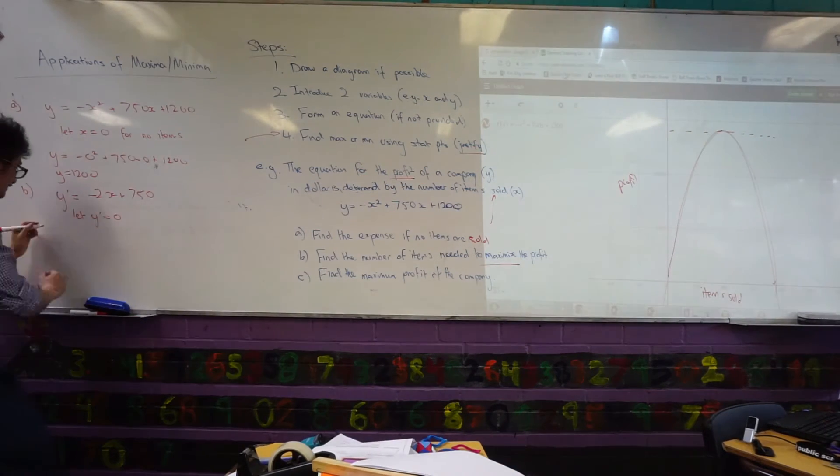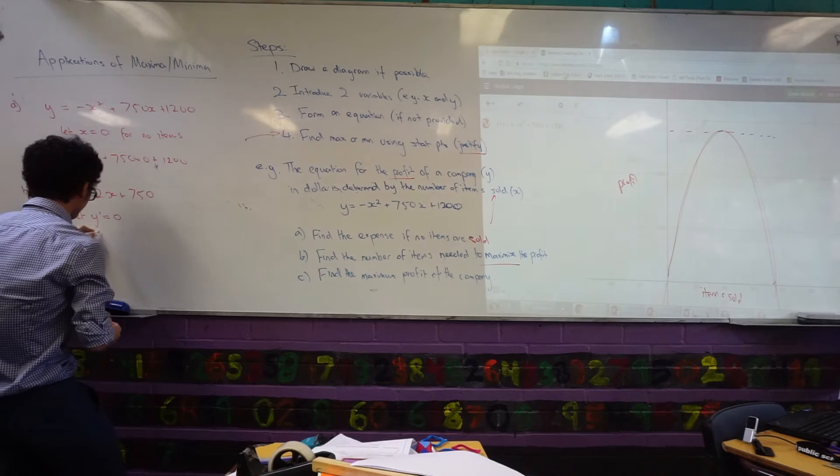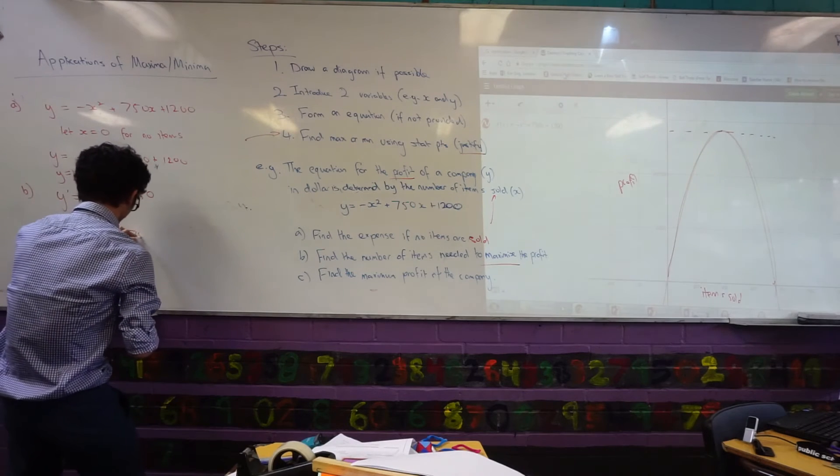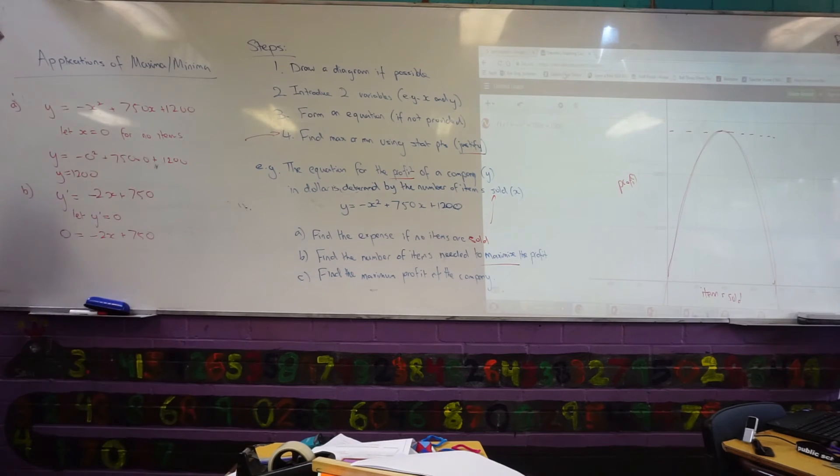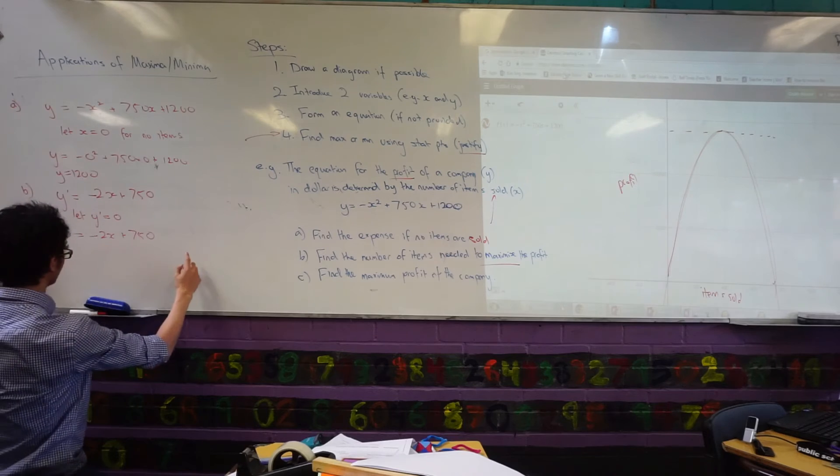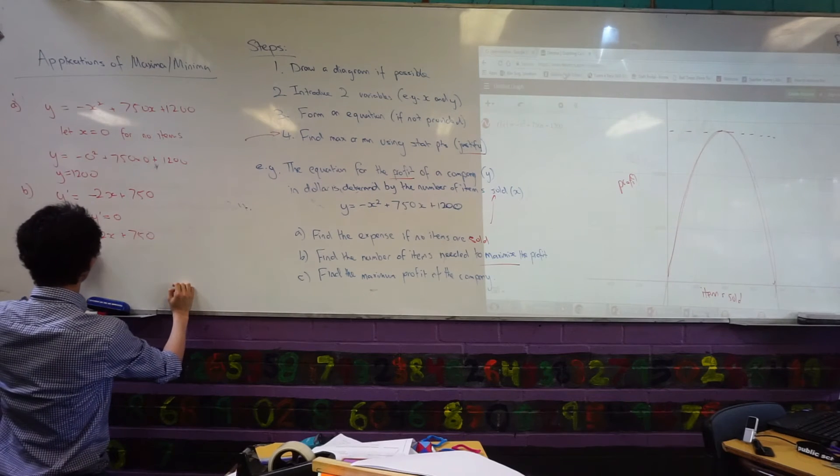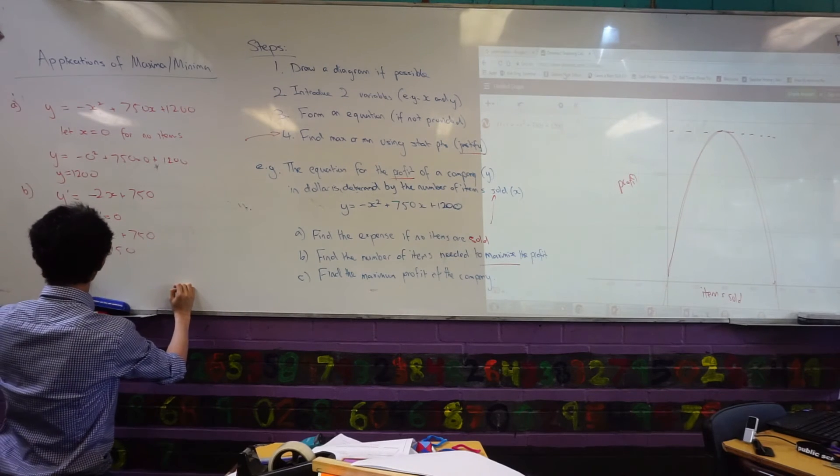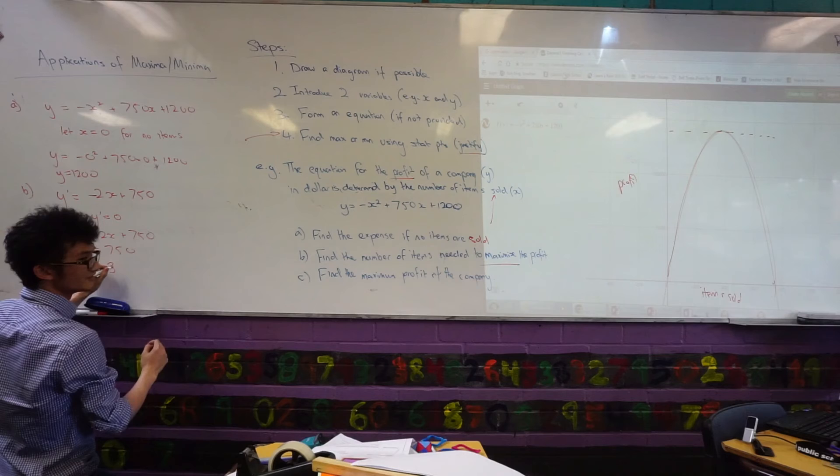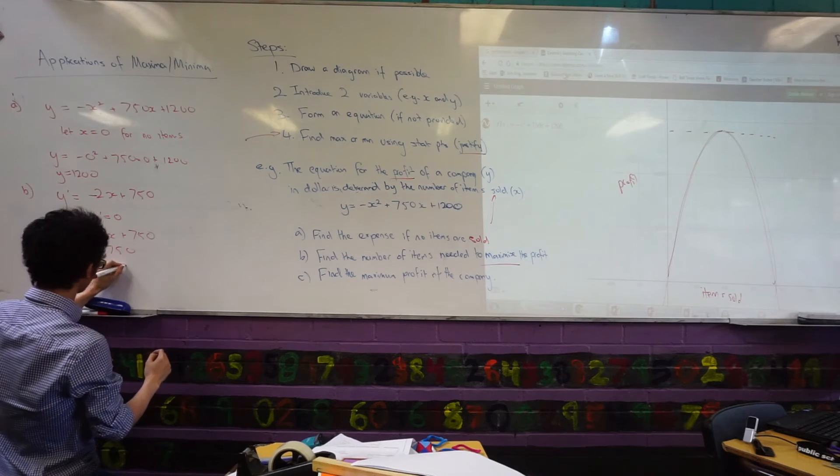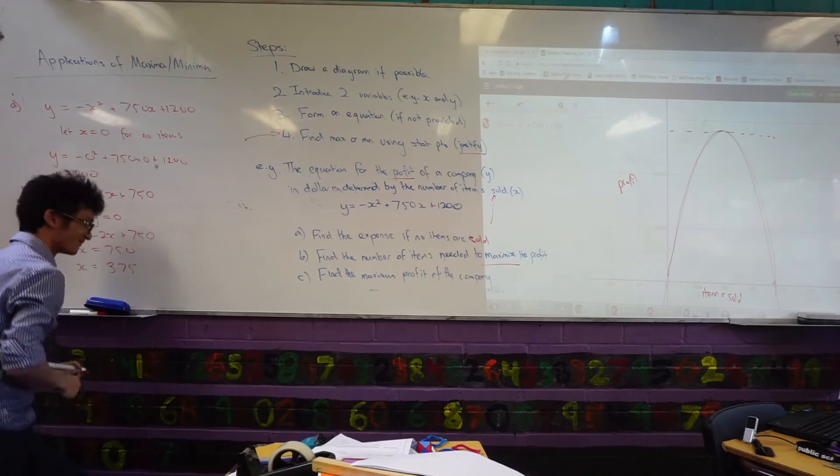I can still use my normal calculus. This is just easy stuff. Zero equals to negative 2x plus 750. What am I trying to solve for? X. So, I just want to arrange. 2x equals 750. Good. Obviously, we're looking for the maximum. Three, seven, five. 375. Don't question me, Bori. Yeah, it does.